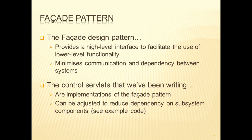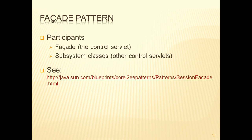We could further adjust this to reduce the dependency on subcomponents, and we'll perhaps see some examples of that a little bit later. In the facade pattern we have simply two types of participants: the facade, and the subsystem classes, which in our internet applications are the other servlets, whether they be control, model, or view.